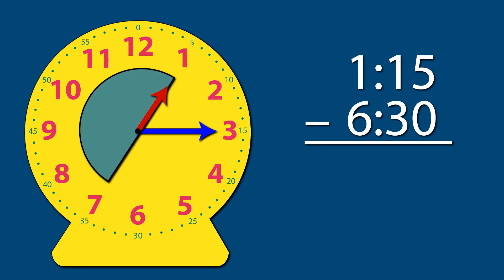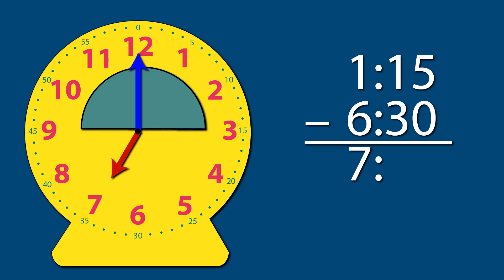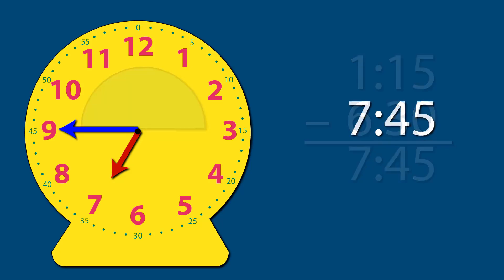From there, move the hour hand back 6 hours. That takes you to 7. Now move the minute hand back 30 minutes from 15. 15 minutes back takes you to 7 on the dot. And 15 more minutes takes you to 7:45. So the new time is 7:45. That should look like this.